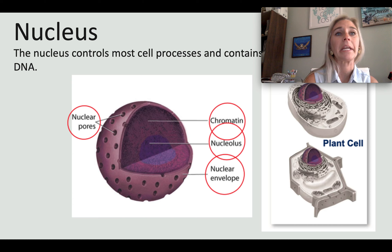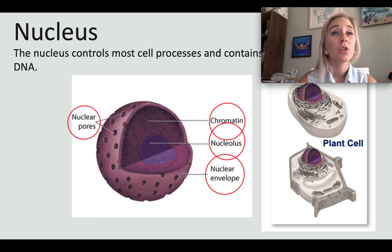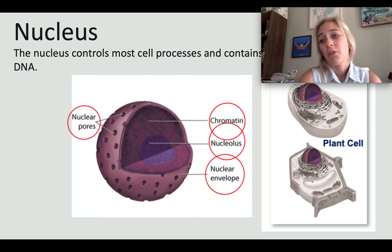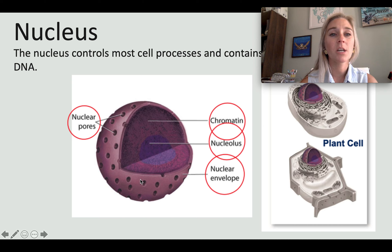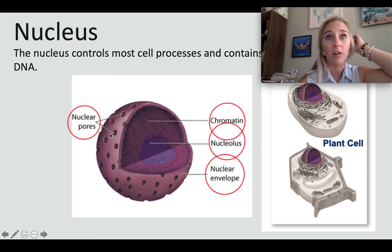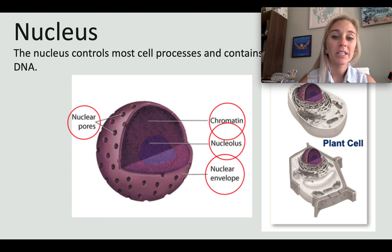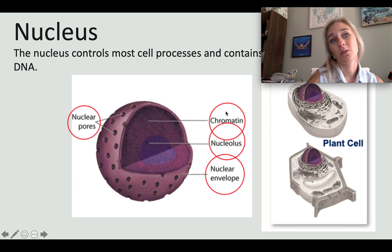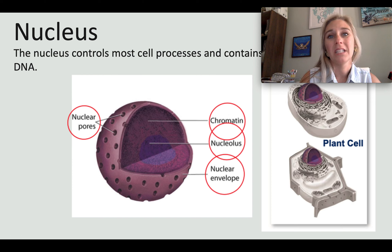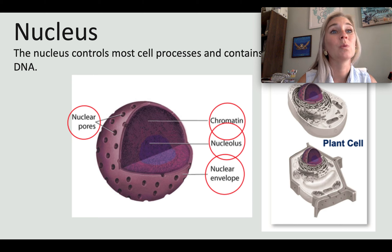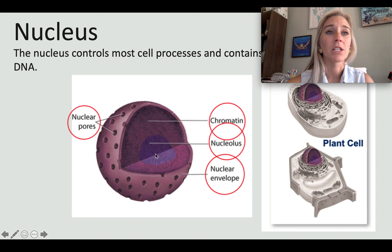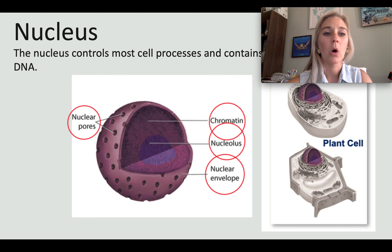Prokaryotes do not have a nucleus — their DNA floats in the cytoplasm. Looking at the nucleus, you'll see the nuclear envelope, a double-layered membrane that acts as a barrier to protect the DNA inside. Nuclear pores are tiny holes in the nuclear envelope that allow certain things to enter and leave. Chromatin is uncoiled DNA and protein — it's the form DNA is in when it's not condensed. The nucleolus is where ribosomes are initially assembled.